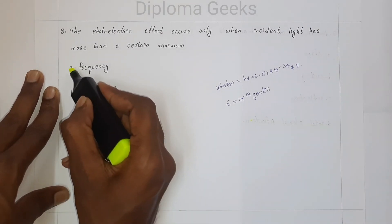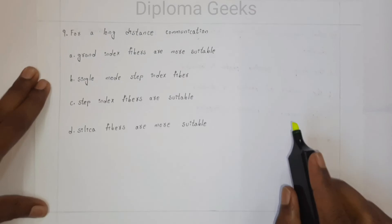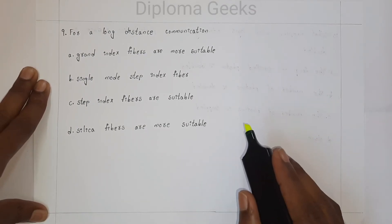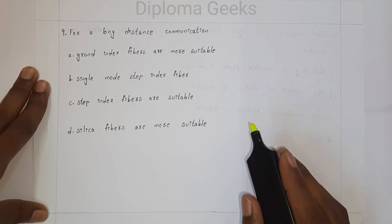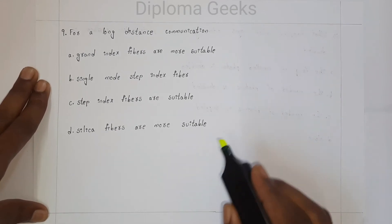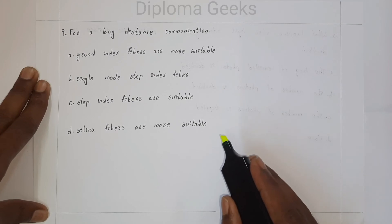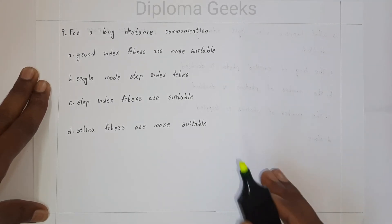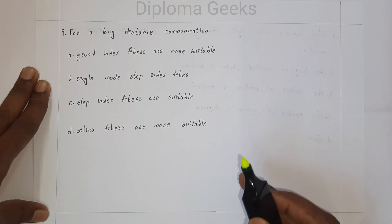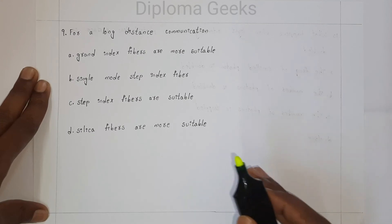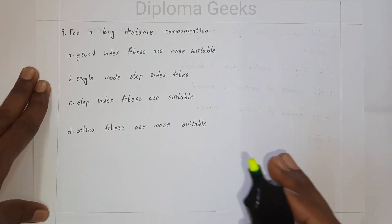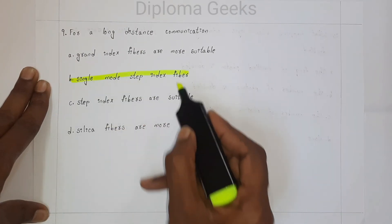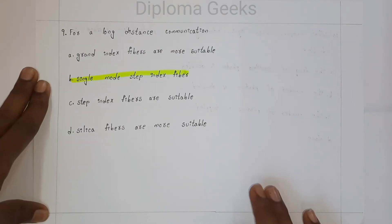Question number nine: for long distance communication, what is the condition — option A: graded index fibers are more suitable, option B: single mode step index fibers are more suitable, option C: step index fibers are suitable, option D: silica fibers are more suitable. For long distance communication, single mode step index fibers are used. So the answer is option B.